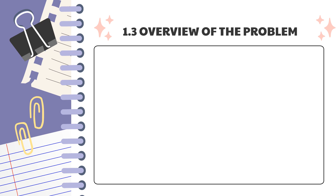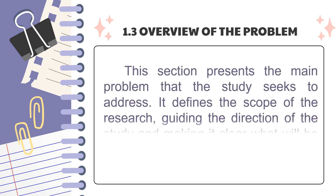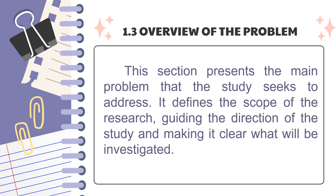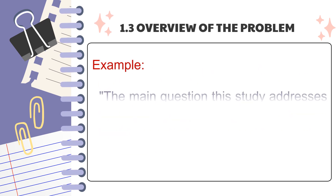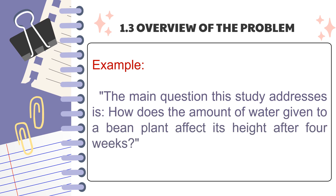Next, the overview of the problem. This section presents the main problem that the study seeks to address. It defines the scope of the research, guiding the direction of the study and making it clear what will be investigated. Example: The main question this study addresses is, how does the amount of water given to a bean plant affect its height after four weeks? The focus is on the relationship between two key variables — the amount of water provided and the height of the bean plant — which is crucial for understanding proper plant care.